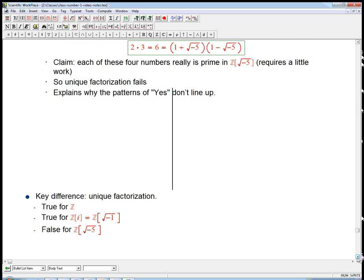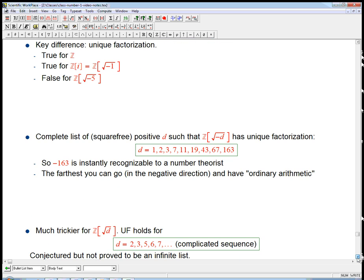The key difference here in these different situations is unique factorization. It was true for the integers. It's true for the Gaussian integers, which is where we allow ourselves to take the root of minus 1,